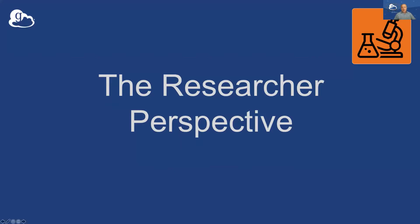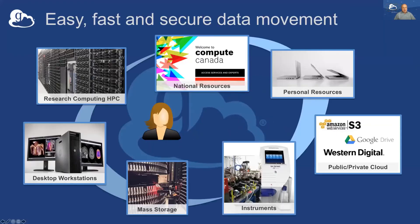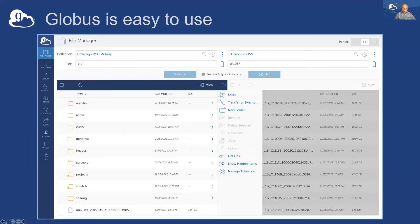From the researcher perspective, Globus is about easy, fast, and secure data movement between any types of systems — your laptop, cloud storage, HPC systems, archival storage. There's a graphical user interface: you point your browser to Globus.org, log in with credentials from your institution — typically without creating a Globus account — and then point and click to select the two systems between which you want to move data, and off you go.